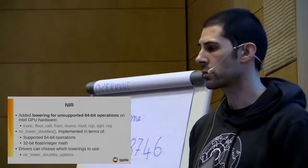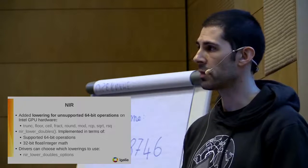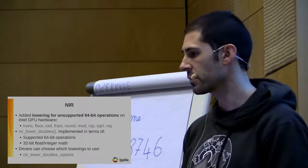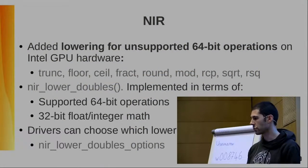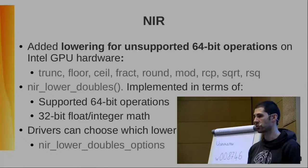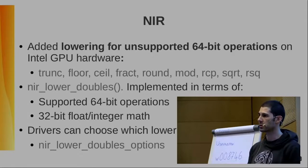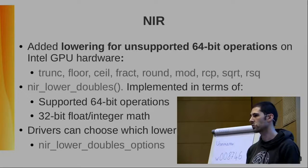The other big change in NIR was a lowering pass for operations not natively supported by Intel GPU hardware: trunc, floor, ceil, fract, and some others. This lowering pass is available for any other NIR consumer interested in implementing the feature with similar restrictions. Basically, for those unsupported operations, it implements them in terms of 32-bit integer math, or other supported 64-bit operations.